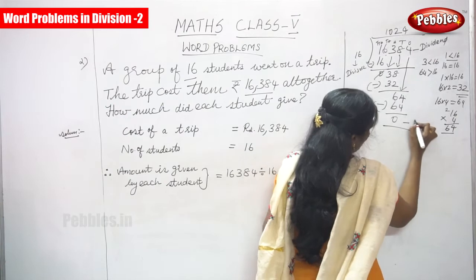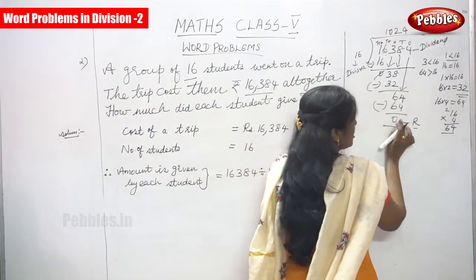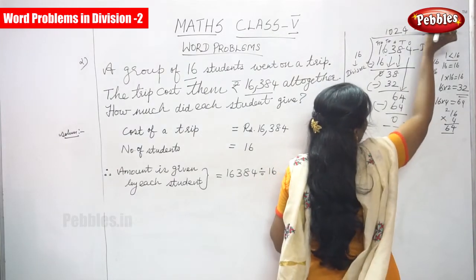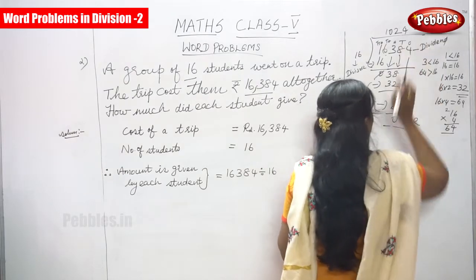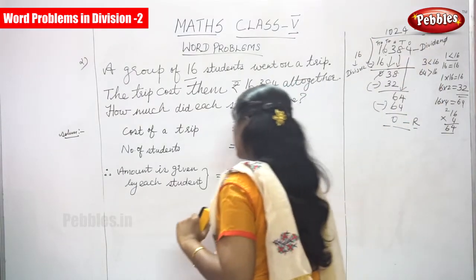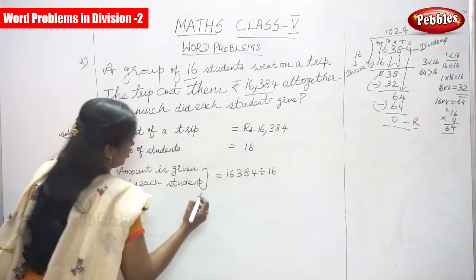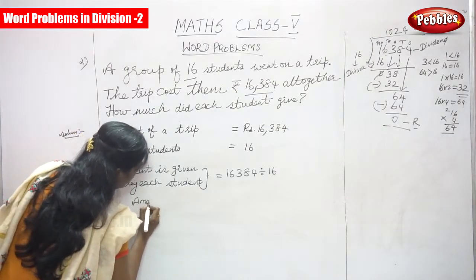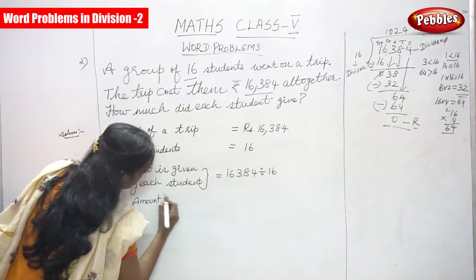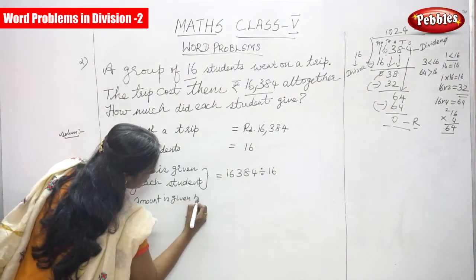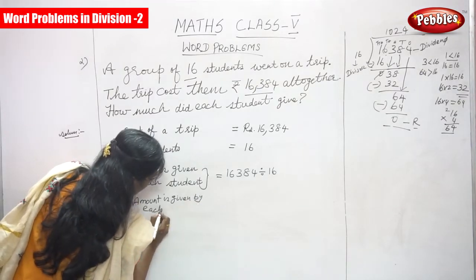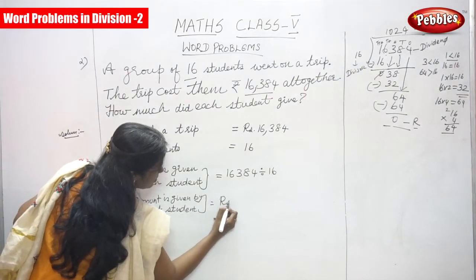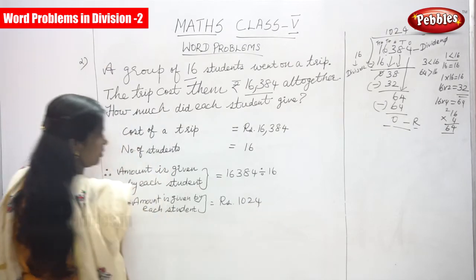The remainder is 0. This is the quotient. The answer is 1024. Therefore, amount given by each student is equal to Rs. 1024.